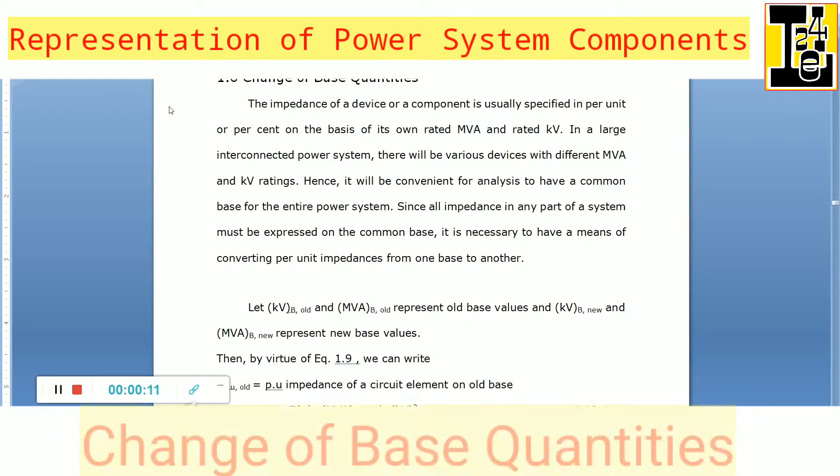The impedance of a device or component is usually expressed or specified in per unit or percent on the basis of its own rated MVA and rated KV. In a large interconnected power system, there will be various devices with different MVA and KV ratings.